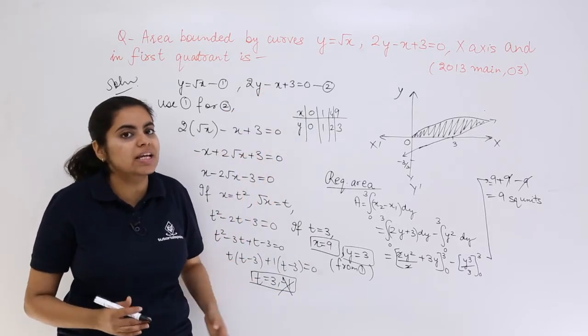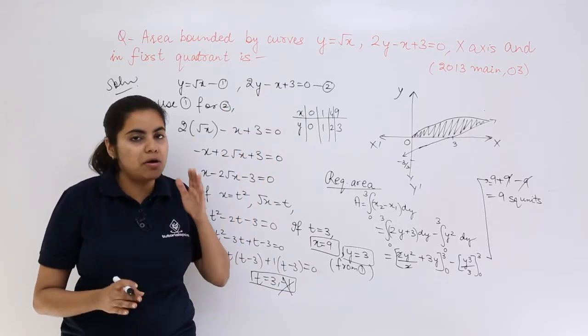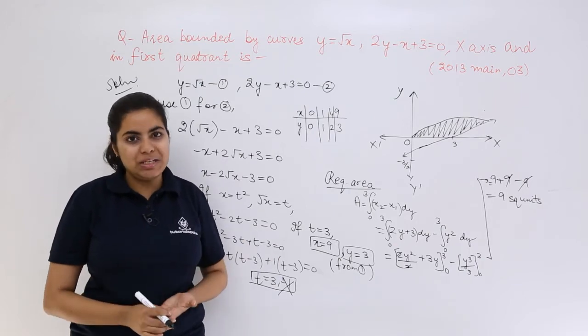So this is how you solve it. First you are going to find out the points of intersection, you are going to draw the graph, make a bit of understanding and then proceed further.